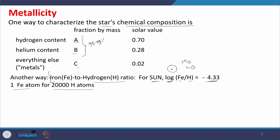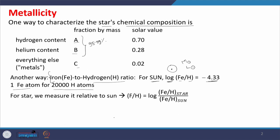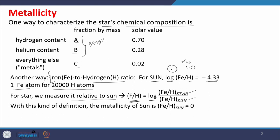For a star, we measure the metallicity — the chemical composition — relative to the sun. So the metallicity is the logarithmic value of the ratio of iron-to-hydrogen for the star divided by iron-to-hydrogen for the sun. This is how one can measure chemical composition relative to the sun. With this definition, the metallicity of the sun is 0. It is important how definitions are used in different contexts.